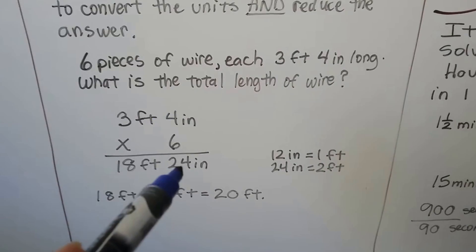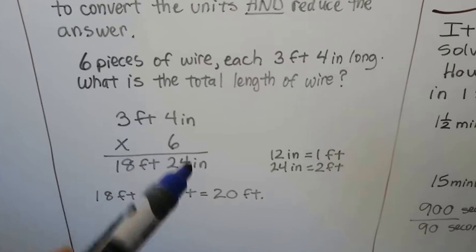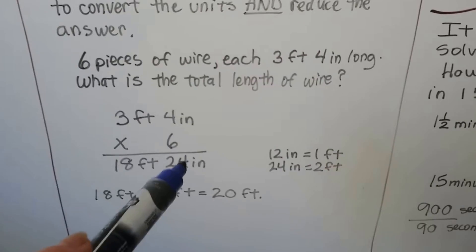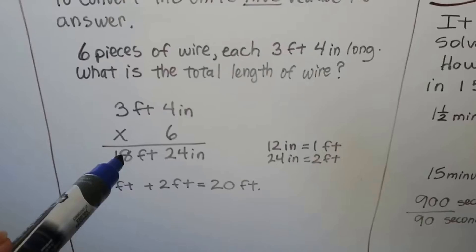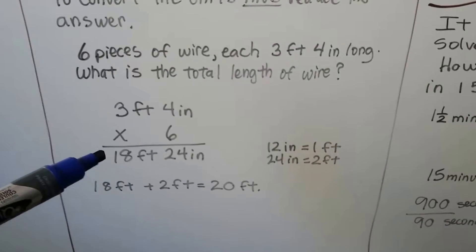We do them separately. 6 times 4 is 24 inches. See how I didn't regroup? I just did 6 times 4 is 24 inches and wrote the answer right down here. Then I do 6 times 3 feet, which is 18 feet, and I have 18 feet 24 inches.